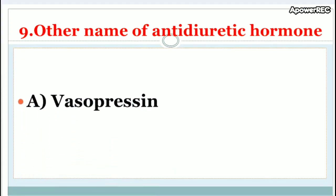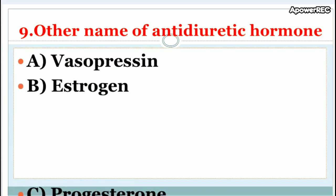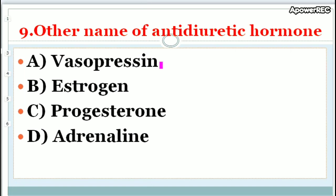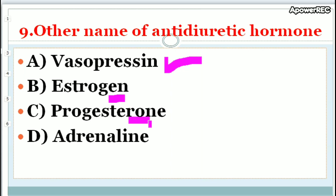Question: What is the other name of antidiuretic hormone? The correct answer is vasopressin, made by the hypothalamus. It regulates and balances the amount of water in the blood. Oestrogen is the primary female sex hormone released from the ovaries. Progesterone also regulates the menstrual cycle. Adrenaline is the fight-and-flight hormone.